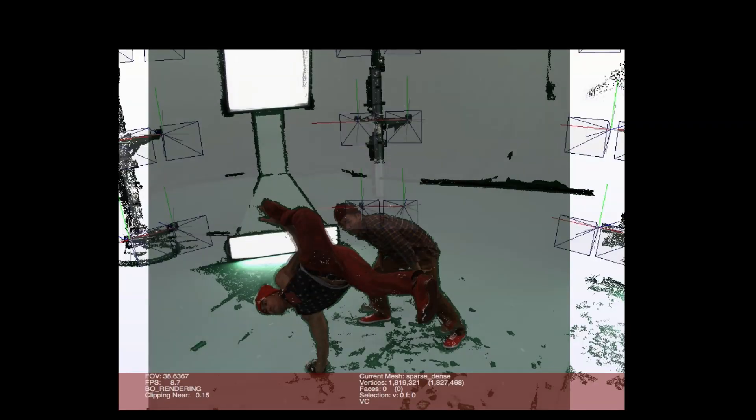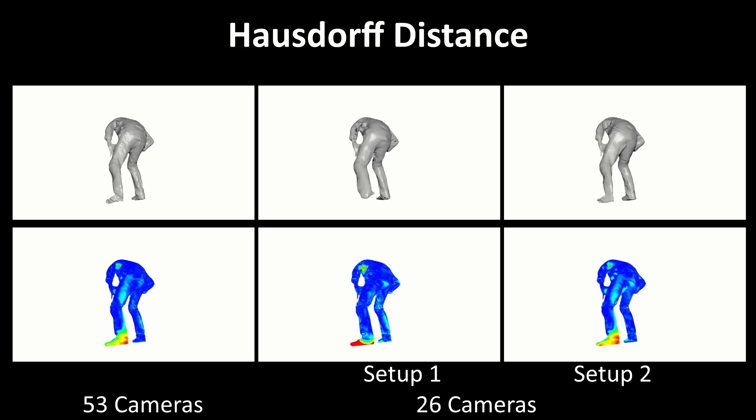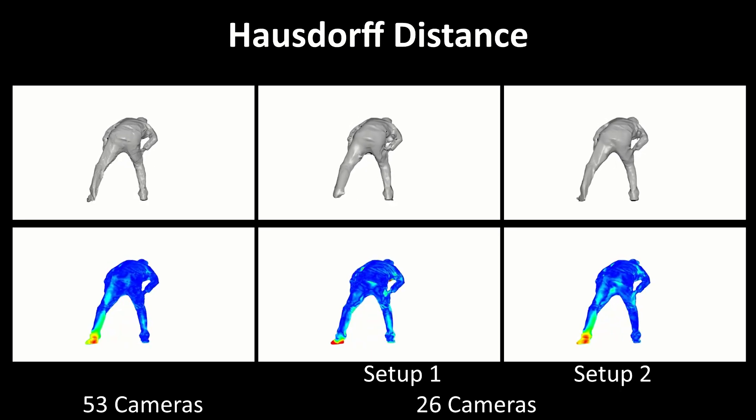We evaluate the quality of our reconstruction using one frame of the Dancing Duo dataset from Colette et al. Although this dataset uses both RGB and infrared cameras, we only make use of the standard ones.